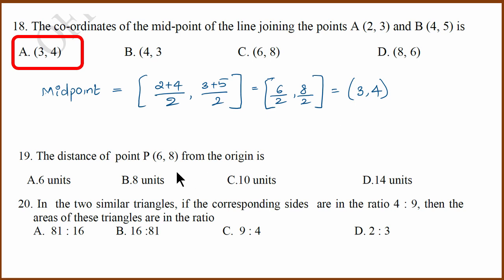Next we have distance from origin question. Distance from origin is square root of x square plus y square, which means square root of 6 square plus 8 square, which is 10. Correct answer is C.